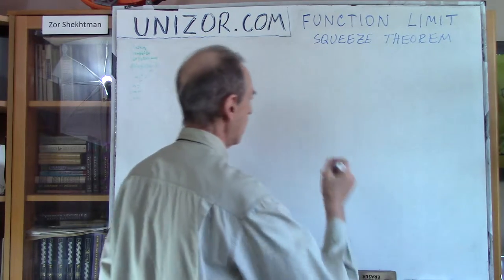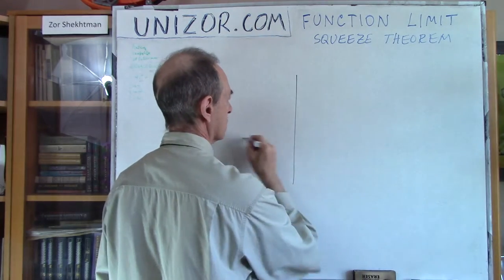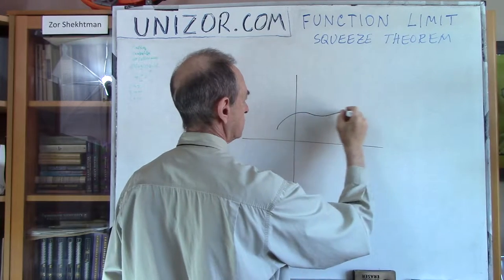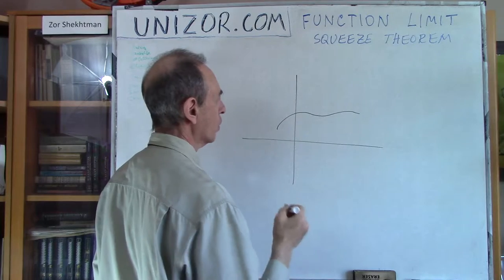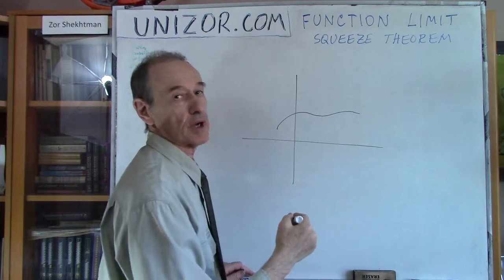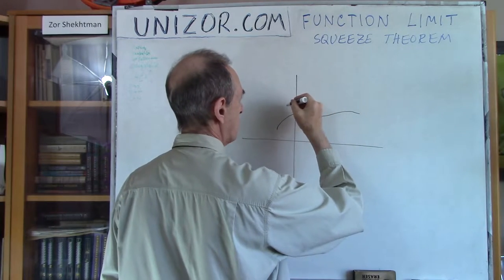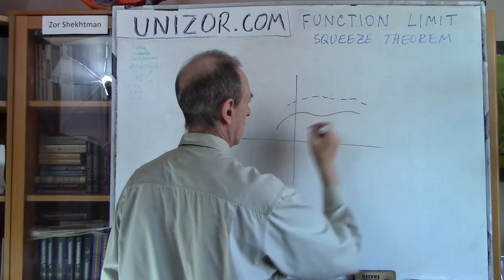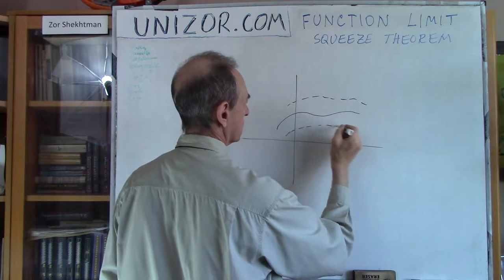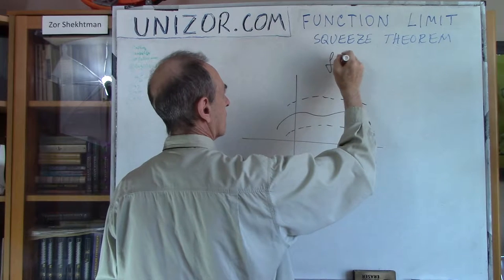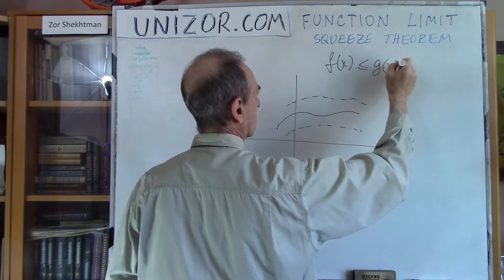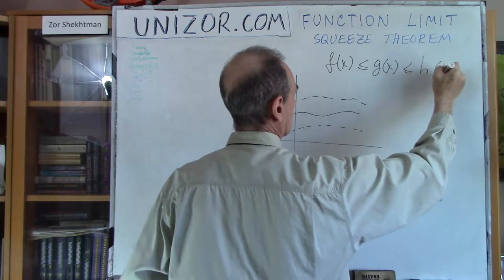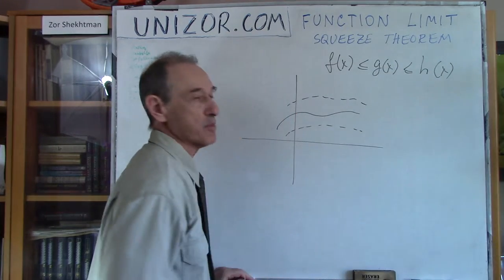So here is what it is. Consider you have a certain function and this function is always between two other functions. So one function which is below it. So there is always this type of inequality.